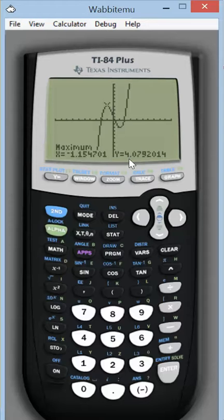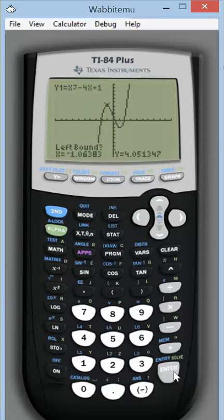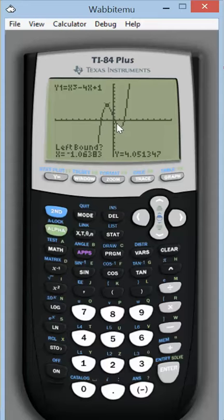Now, for the local minimum, what we'll do is hit second trace again and choose option 3. For left bound, we want to be to the left of the low point. So maybe somewhere right here on the graph is good for a left bound. Let's right arrow over to it. And right there is good enough. Go ahead and hit enter.